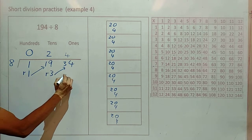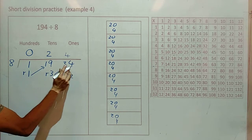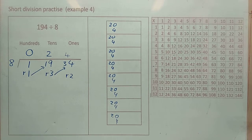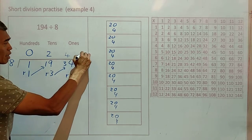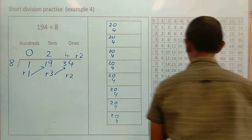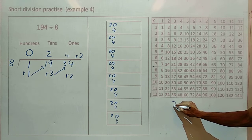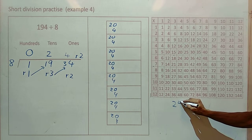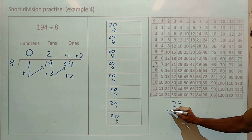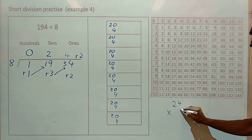Now the remainder is 2 because 34 minus 32 is 2. I have a remainder of 2. So let's add these together. Let's find out whether this is the correct answer. 24 times 8.